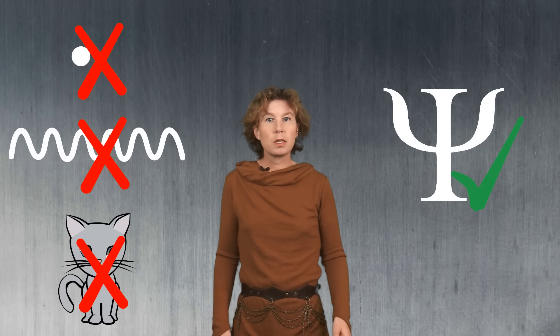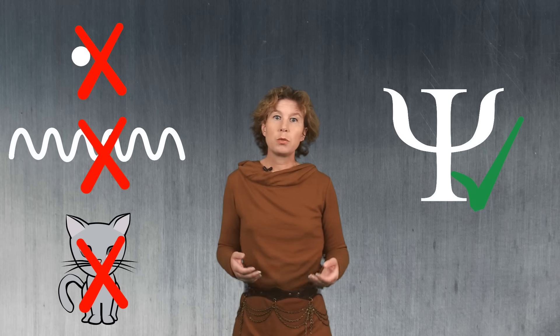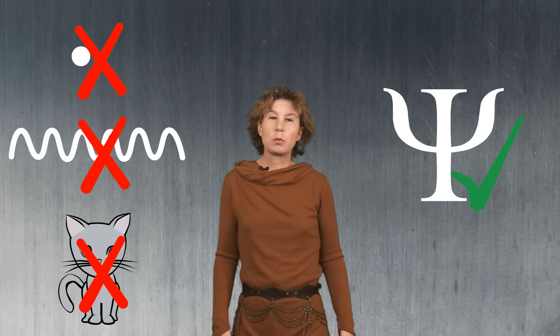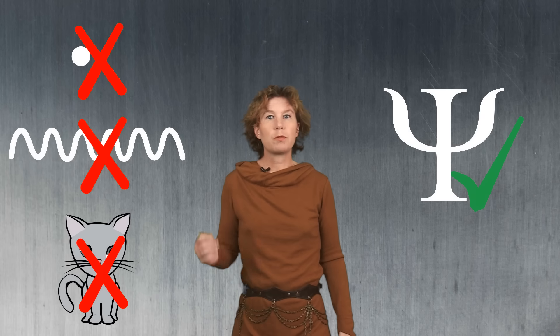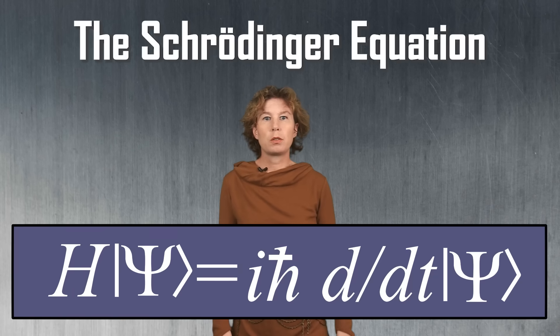Psi is a complex-valued function and from its absolute square you calculate the probability of a measurement outcome — for example, whether the cat is dead or whether the particle went into the left detector and so on. But how do you know what the wave function does? Well, we have an equation for that: the Schrödinger equation.